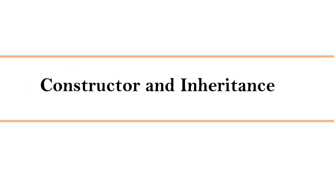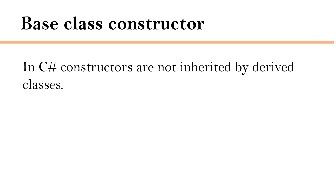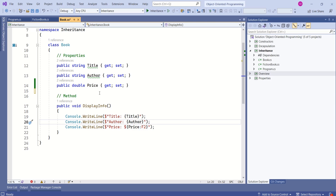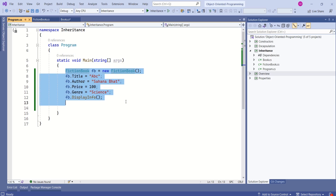Now we know what inheritance is and how to set up inheritance between two classes. Before proceeding further, let's understand the relationship between constructors and inheritance. In C#, constructors are not inherited by derived classes. However, when you create an instance of a derived class, the constructor of the base class is automatically called before the derived class constructor. In this base class we have not added any constructor, so the C# compiler will add a default parameterless constructor.